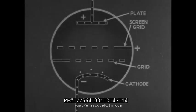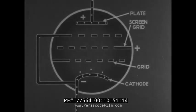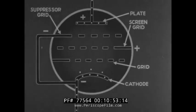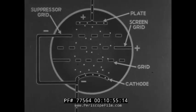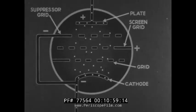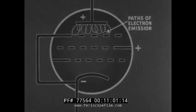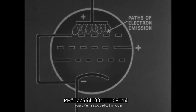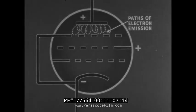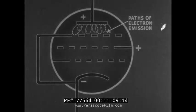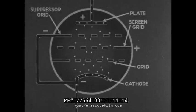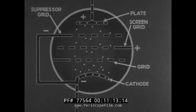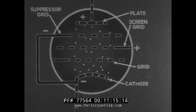A third grid may be placed between plate and screen grid. This grid is known as the suppressor grid. Electrons flow freely through all three grids, but the pads of secondary emission are shortened by the negative suppressor grid. As a result, electrons emitted due to electronic bombardment do not extend as far as the screen grid. The pentode tube represents the highest development of the triode principle.